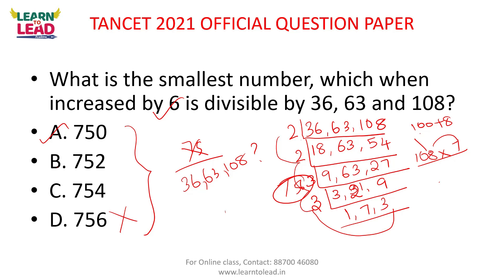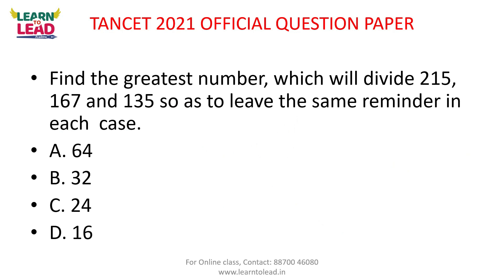But this is the trick. We will go to the next question. Find the greatest number which will divide 215, 167, and 135 so as to leave the same remainder in each case.